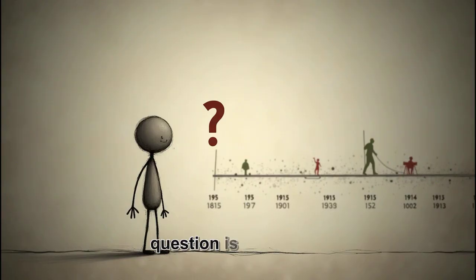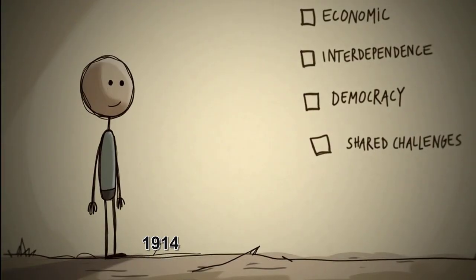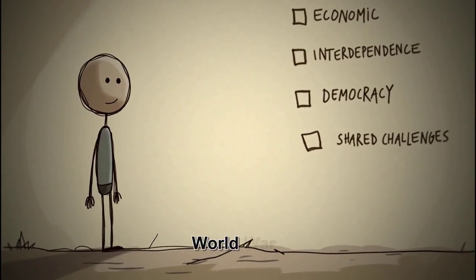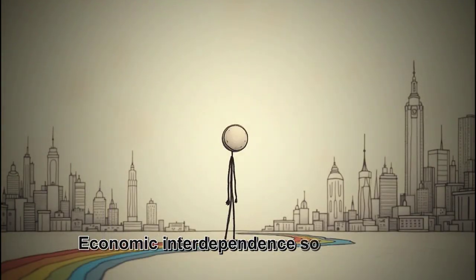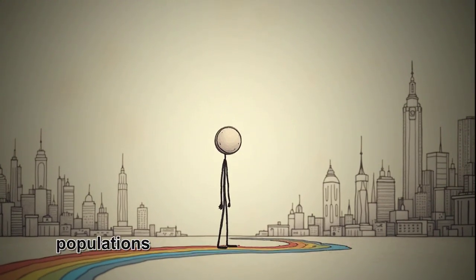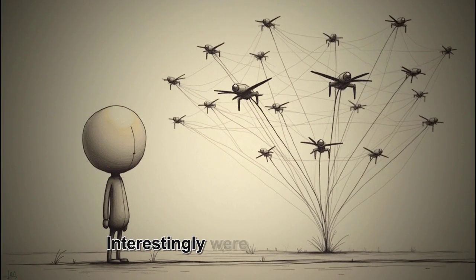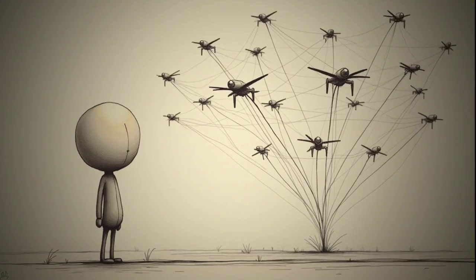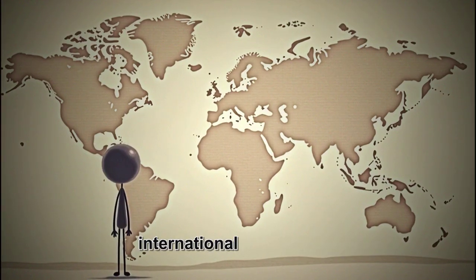Now for the million-dollar question. Is any of this actually possible? Historically, periods of global peace have been rare and brief. The closest we've come was the period between 1815 and 1914, known as the Long Peace, which ironically ended with World War I. Political scientists identify several prerequisites for lasting global peace: economic interdependence so deep that war becomes economically impossible, democratic governance systems that make leaders accountable to peace-preferring populations, and shared existential challenges that require cooperation to solve. Interestingly, we're closer to these conditions than ever before in human history. Global trade makes nations economically dependent on each other. Democratic ideals are spreading worldwide. And challenges like climate change and potential asteroid impacts require international cooperation.